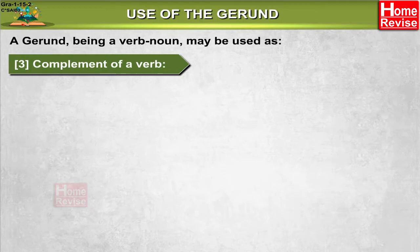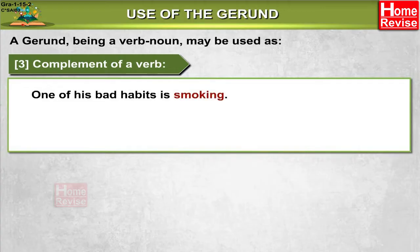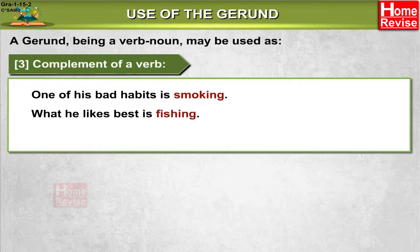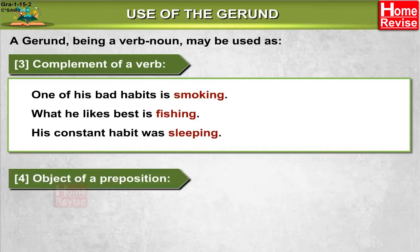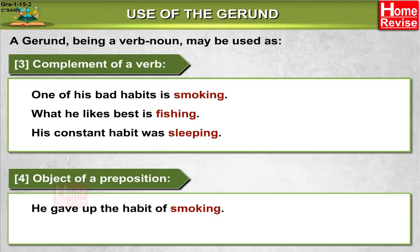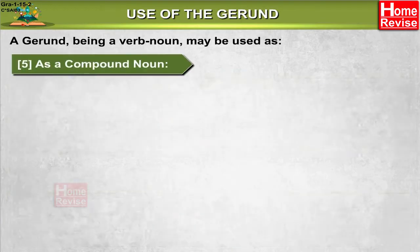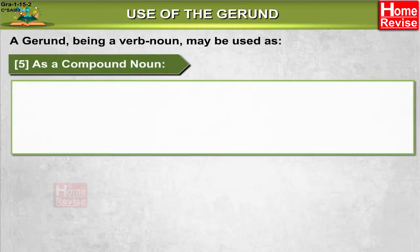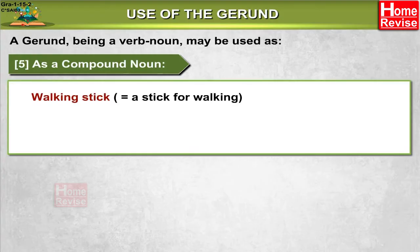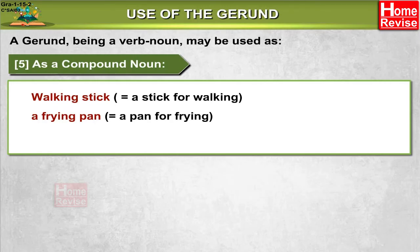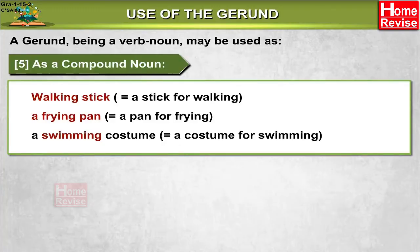3. Complement of a verb — 'One of his bad habits is smoking'; 'What he likes best is fishing'; 'His constant habit was sleeping.' 4. Object of a preposition — 'He gave up the habit of smoking'; 'He was rebuked for swimming in a dirty pond.' 5. As a compound noun — 'Walking stick' means a stick for walking; 'a frying pan' means a pan for frying; 'a swimming costume' means a costume for swimming.